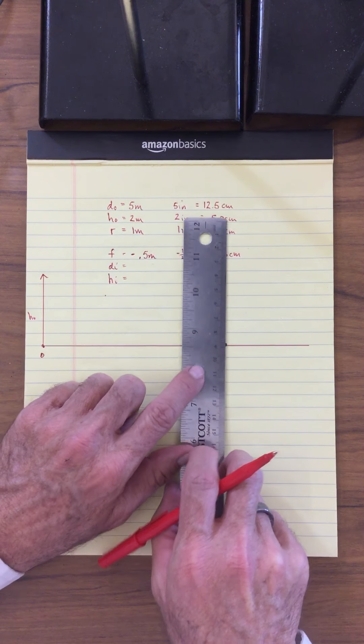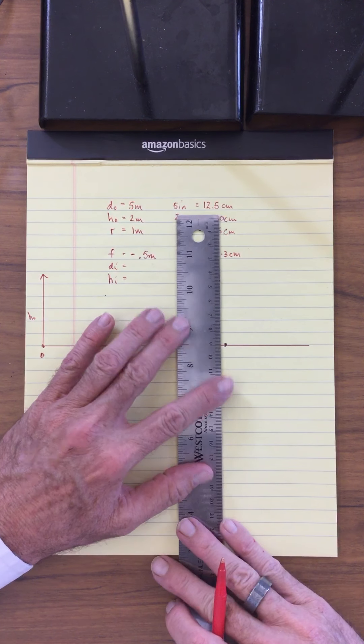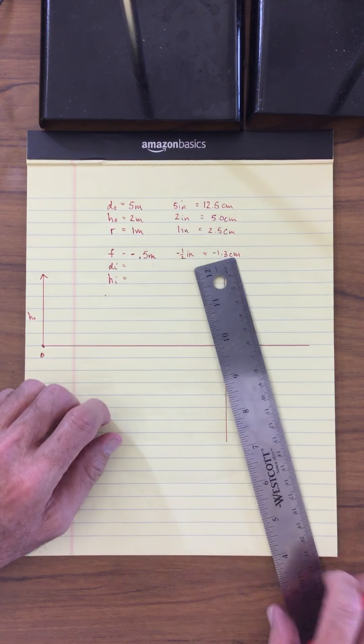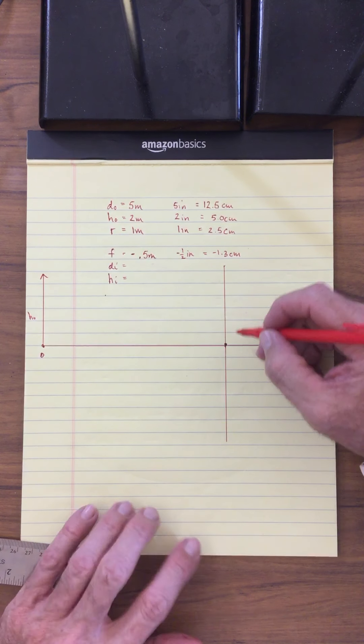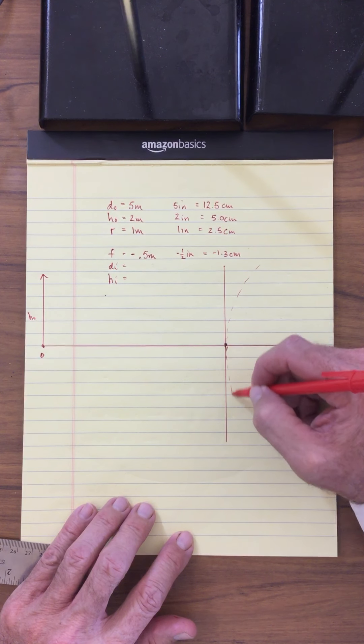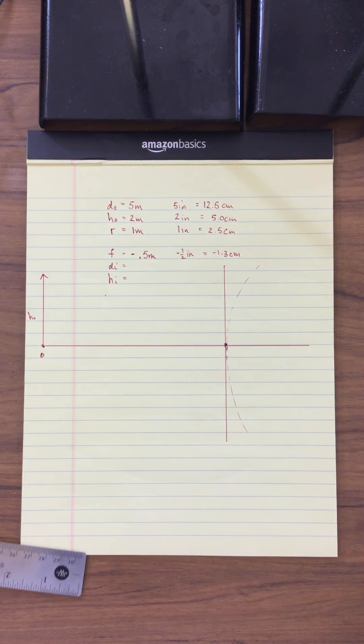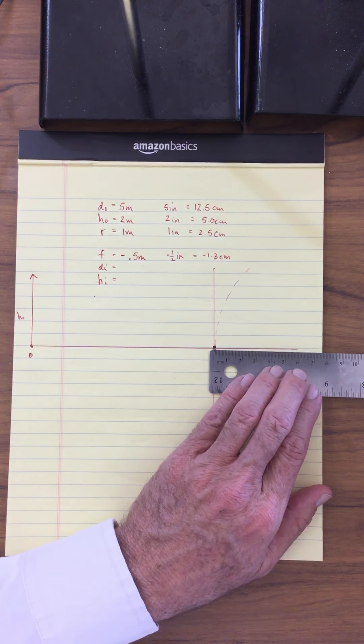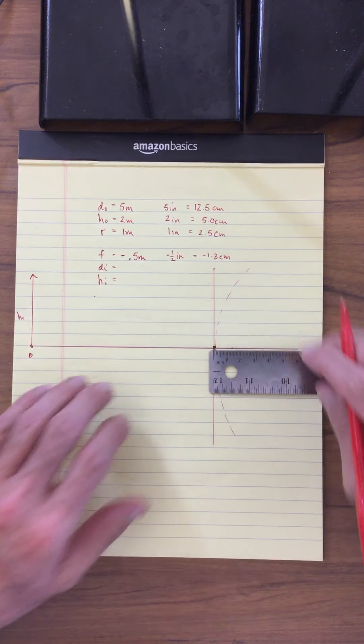So we can go ahead and we can draw our mirror in. So there's the mirror. Remember, this is concave like that. And I'm going to measure my focal point at 1.3 centimeters.